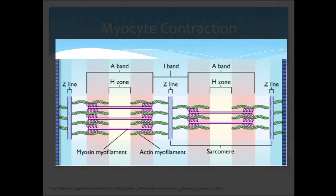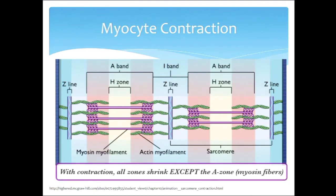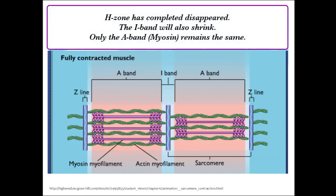Those are the key anatomical highlights. When contraction occurs, all of these structures begin to move closer together. The Z-lines and associated actin filaments get pulled together. Myosin stays the same length but pulls the actin in. The A-band stays the same length because it represents the myosin length, which doesn't change. The H-zone shrinks and eventually disappears as the actin comes closer together. Similarly, the I-band does the same as all of these individual links in the chain come together.